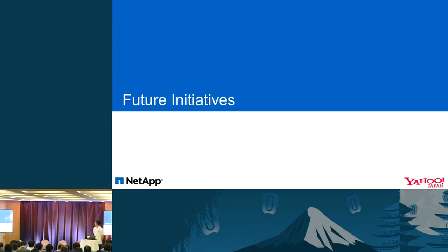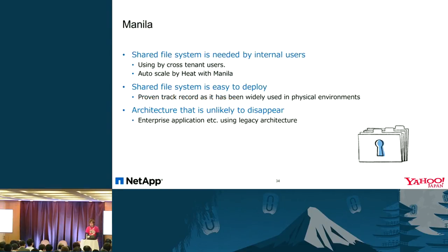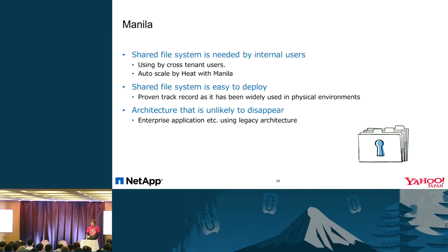Finally, let me talk about future initiatives. We would like to proceed with Manila. The shared file system is in demand within our company, and Manila allows file sharing per tenant. Based on scale and timing, you can create a common shared file system. This shared file system has been widely used since the physical infrastructure era, and it makes service implementation easier. For users who are not yet able to migrate to IaaS, this is a great feature.